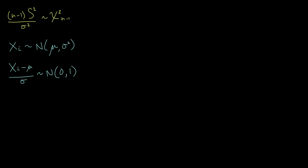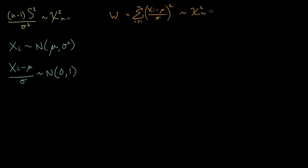If I take a bunch of xi's that are identically distributed but independent of each other, I'm going to get a bunch of standard normal random variables by doing this transformation, and those standard normal variables are going to be independent of each other as well. I can take the sum from i equals one to n of these random variables and square them. Since each term is a standard normal distribution, the sum of n squares of standard normal distributions is going to be distributed as a chi-square distribution with n degrees of freedom. This is actually how we've defined the chi-square distribution.